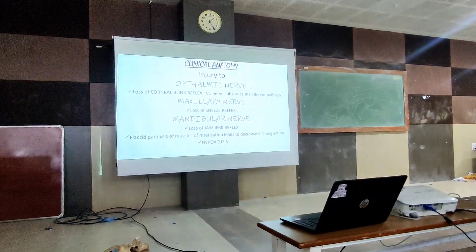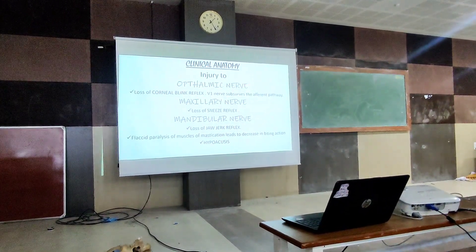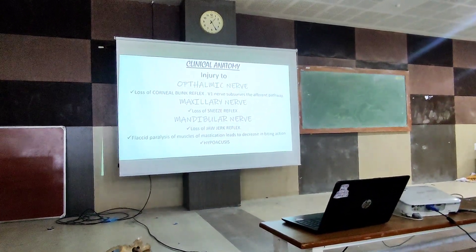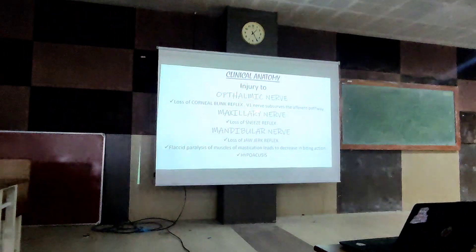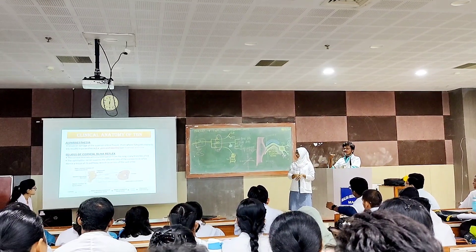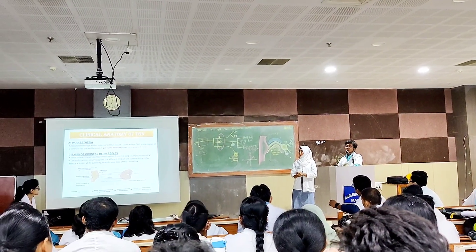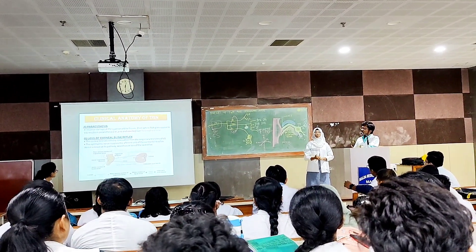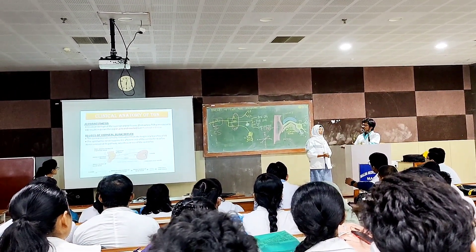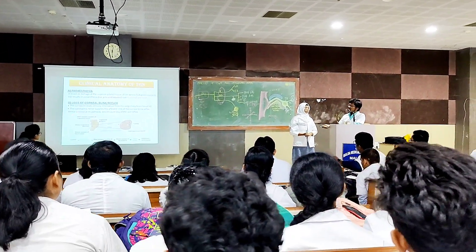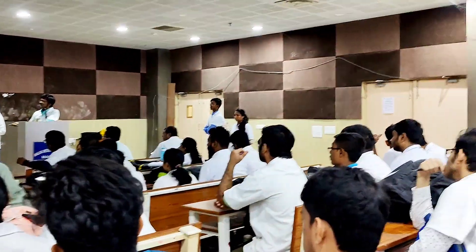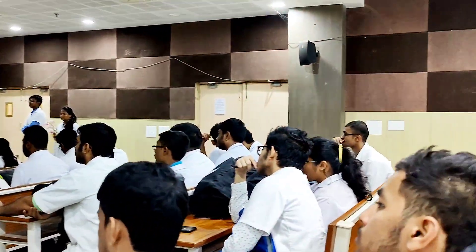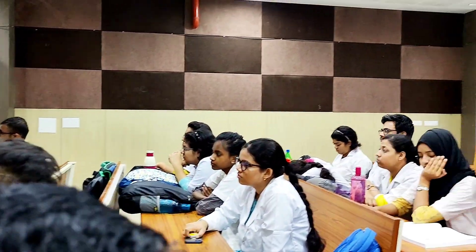If there is any injury to the ophthalmic nerve, there is a loss of the corneal blink reflex. If any irritant enters our cornea, we blink our eye. If for any reason the ophthalmic nerve is damaged, the lesion at its pathway would cause the loss of the corneal reflex. So if any damage happens to the ophthalmic nerve, we will lose our corneal blink reflex.